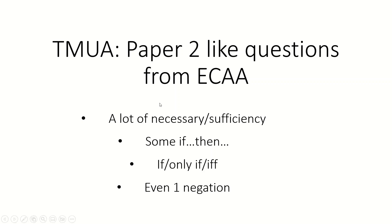I found out this afternoon that the pre-2019 ECAA papers have lots of, right at the end, Paper 2-like questions — like Necessary Sufficiency, If-Then, If and Only If. There's even a negation question in here. For some reason they stopped asking it after 2020, which is why I didn't notice, because I've only looked properly at the 2020 and 2021 papers before today, which is really unfortunate, because otherwise I would have done this a while ago.